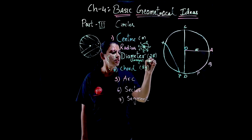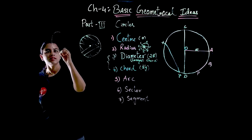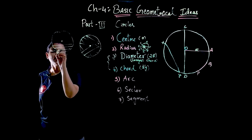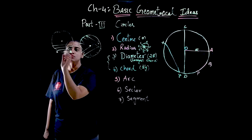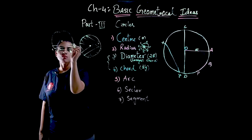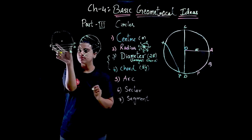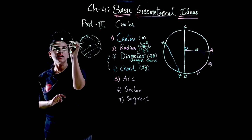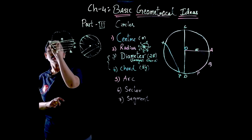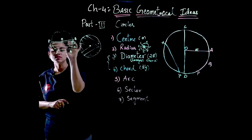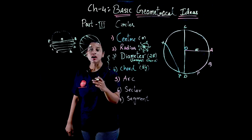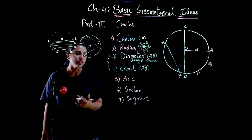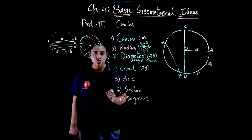That is why diameter is called the longest chord. If you draw chords on a circle, chord AB is smaller than CD, and CD is smaller than EF. As you draw the chord closer to the center O, its length increases. At some point the line PQ passes through the center — that is the diameter. So a chord can be a diameter, and a diameter can be a chord, but every chord cannot be a diameter.